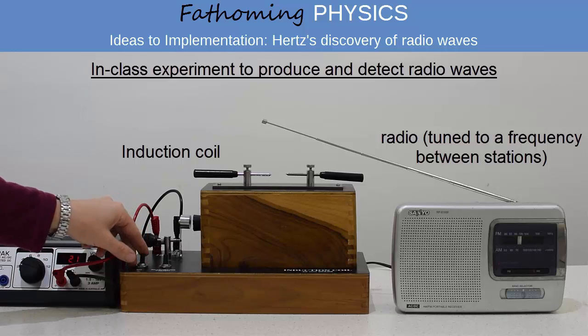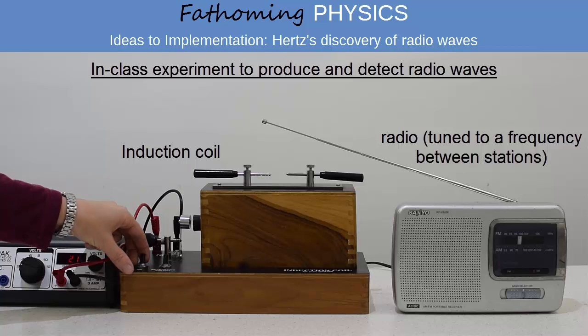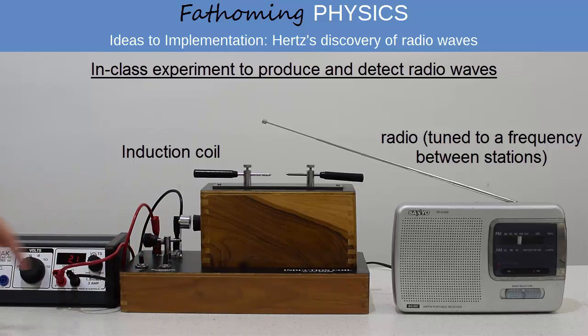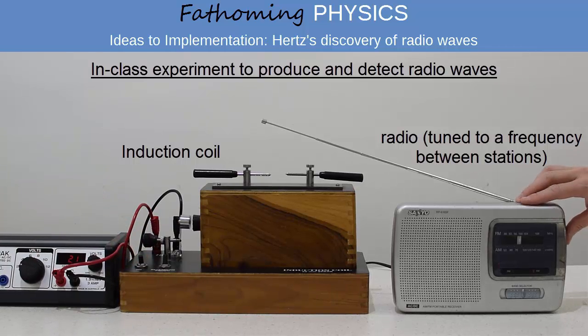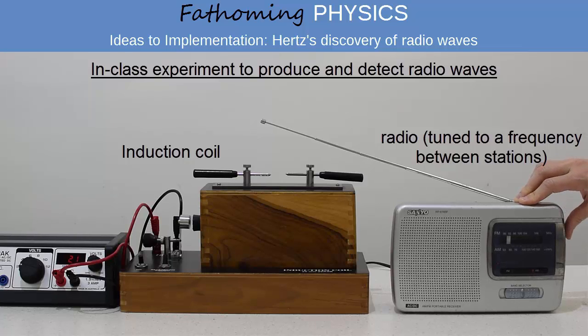We note that the electromagnetic radiation is produced by the spark gap with a wide range of frequencies. We can see the visible light and we can detect static across a wide range of frequencies with the radio.